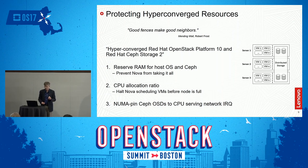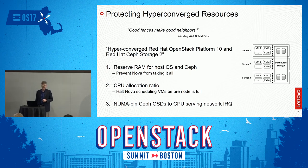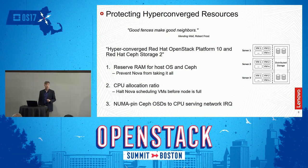The approach consists of reserving RAM for the OS and also for Ceph — the mechanism was designed just for reserving for the OS, but you can extend it and use it for Ceph as well. It also involves setting the allocation ratio so that you reserve the right number of cores for Ceph held back from Nova, so Nova doesn't consume them all. And finally, it's best to pin the OSDs to the CPU socket that will actually take the interrupts, just for efficiency's sake.